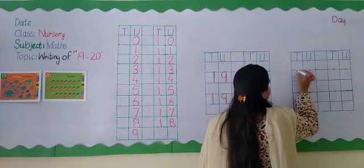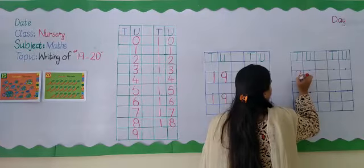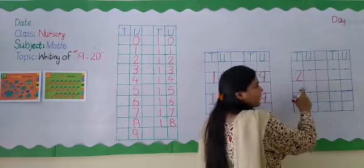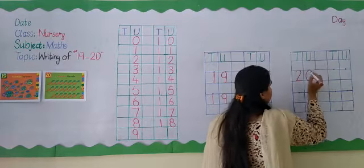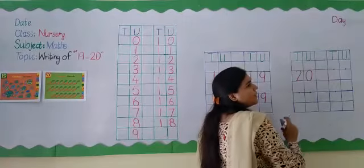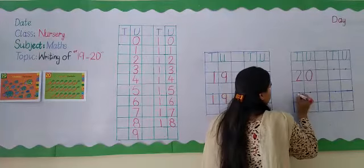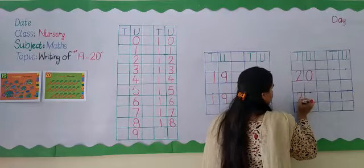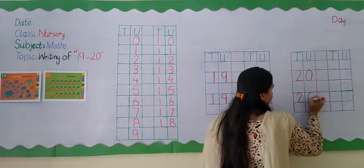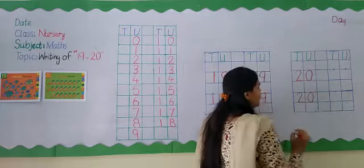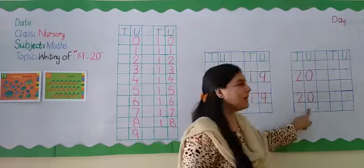Turn around. Go down and sit down. What do we write? 2. Go round and round. What do we write? 0. 2, 0 makes 20. Turn around. Go down and sit down. Go round and round. 20. 2, 0 makes 20.